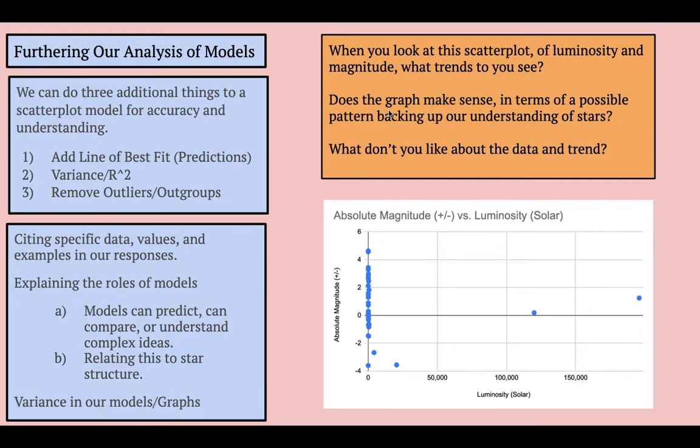Does this actually make sense when we think about how stars live and die? And what don't you like about the data and the trend in the scatterplot? What are some weaknesses or errors that you might see?